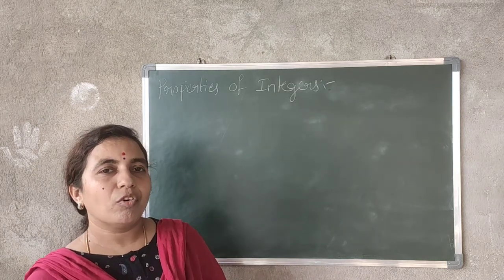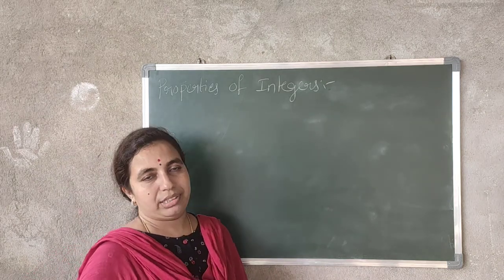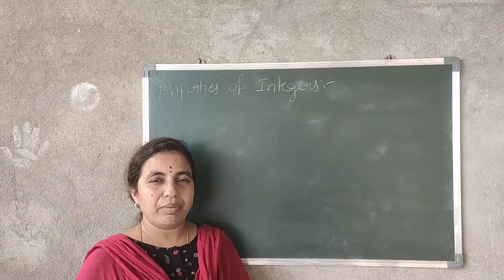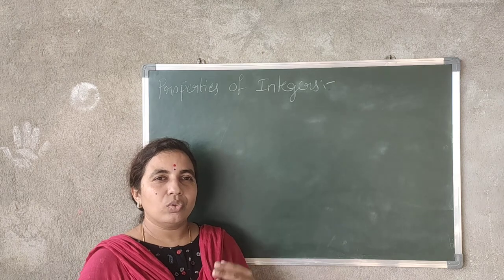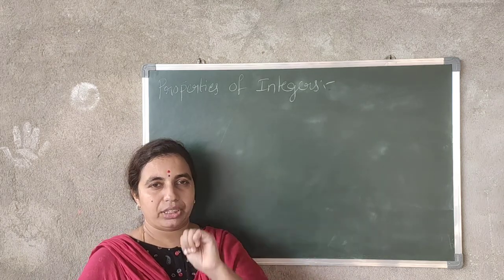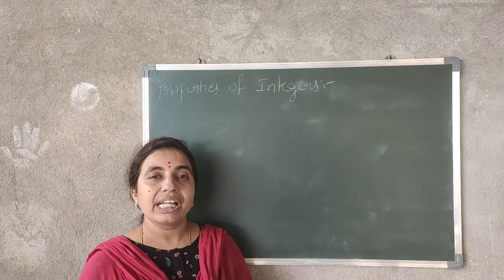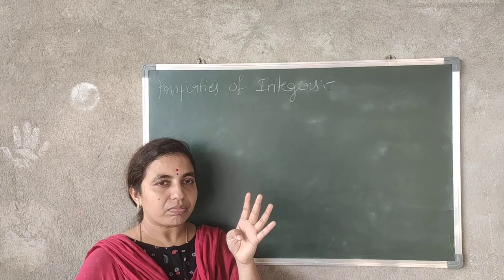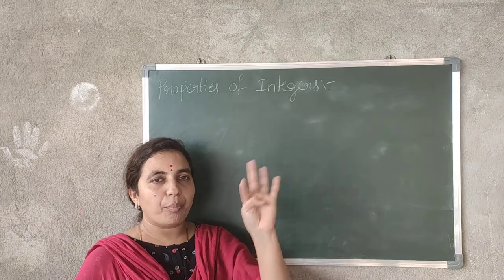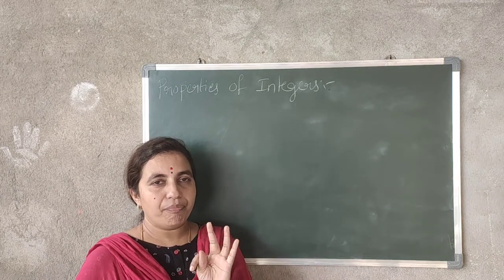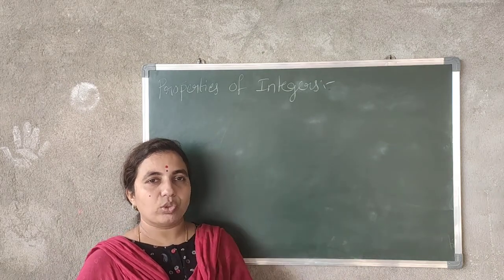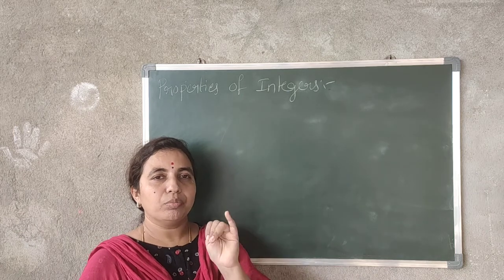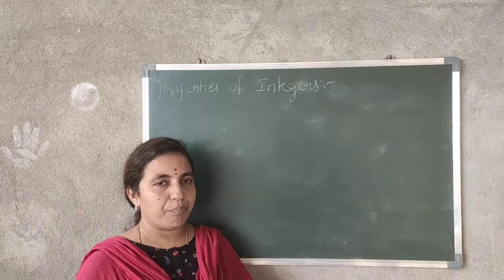Now, today the next topic of integers is the properties of integers. In 6th class we have learnt about properties of whole numbers. Now, what are those properties that you have learnt? We have 4 properties: closure property, commutative property, associative property, and then distributive property.